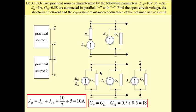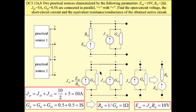If you want to find the Thevenin equivalent, we have to transform this Norton equivalent to Thevenin equivalent to obtain the values of total equivalent resistance and total open-circuit voltage.